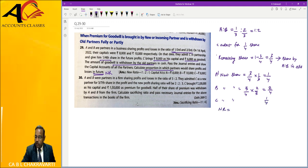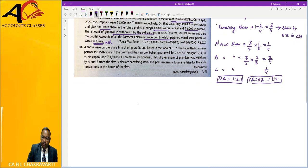What will be the new ratio? 1 is to 2 is to 1. What will be the sacrifice ratio? What will be the old ratio? 1 is to 2. Clear? Now, let's talk about entry.